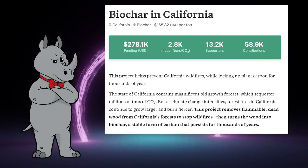To make biochar, they remove dead and flammable trees from old growth forests, which helps prevent wildfires. And then the tree biomass is turned into biochar.